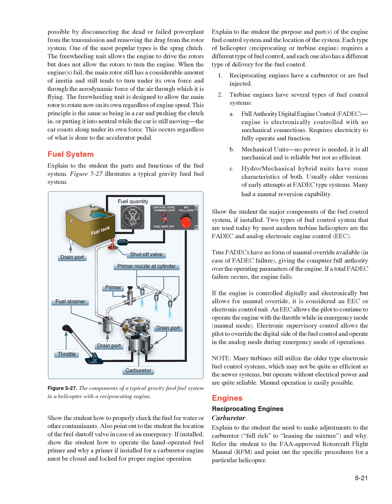Two types of fuel control system used today by most modern turbine helicopters are the FADEC and Analog Electronic Engine Control (EEC). True FADECs have no form of manual override available; if a total FADEC failure occurs, the engine fails. If the engine is controlled digitally and electronically but allows for manual override, it is considered an EEC or Electronic Control Unit. An EEC allows the pilot to continue to operate the engine with the throttle while in Emergency/Manual Mode. Electronic Supervisory Control allows the pilot to override the digital side of the fuel control and operate in Analog Mode during Emergency Mode of Operations. Many turbines still utilize older type electronic fuel control systems which operate without electrical power and are quite reliable, with manual operation easily possible.